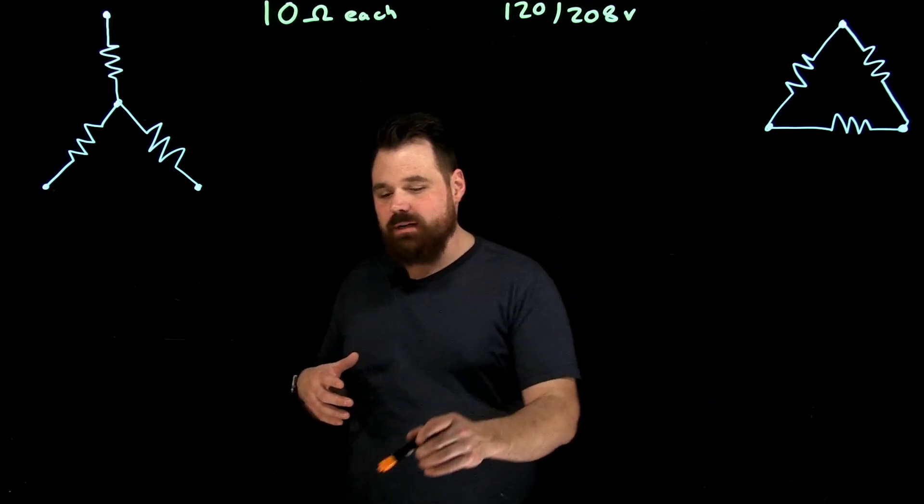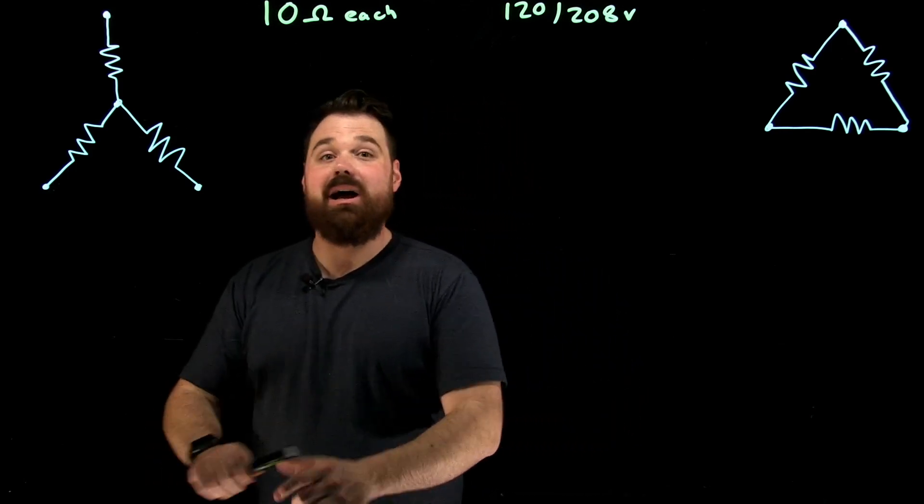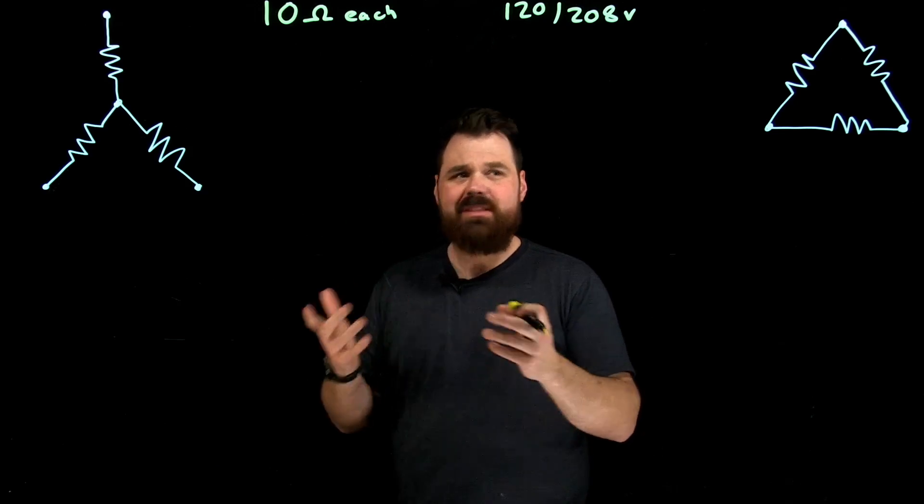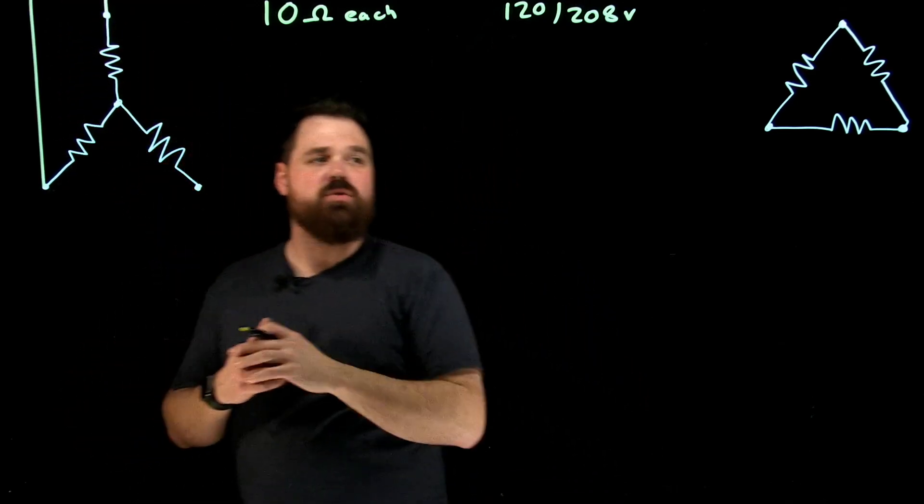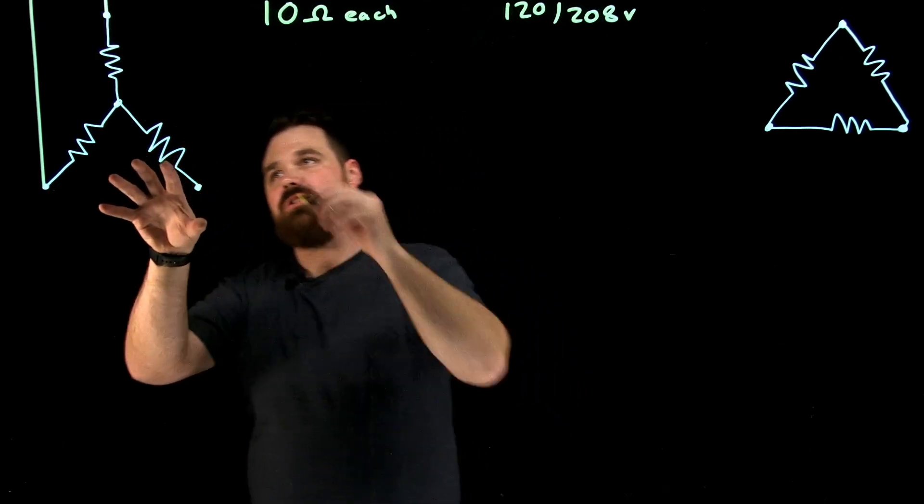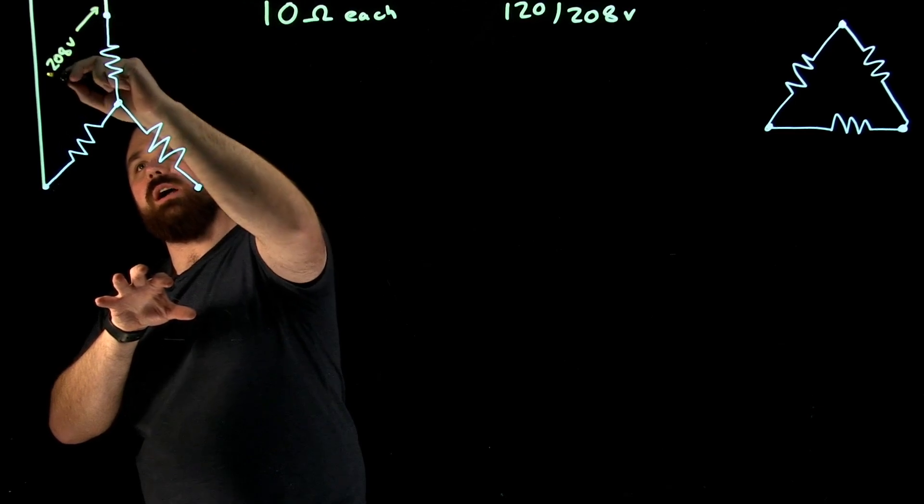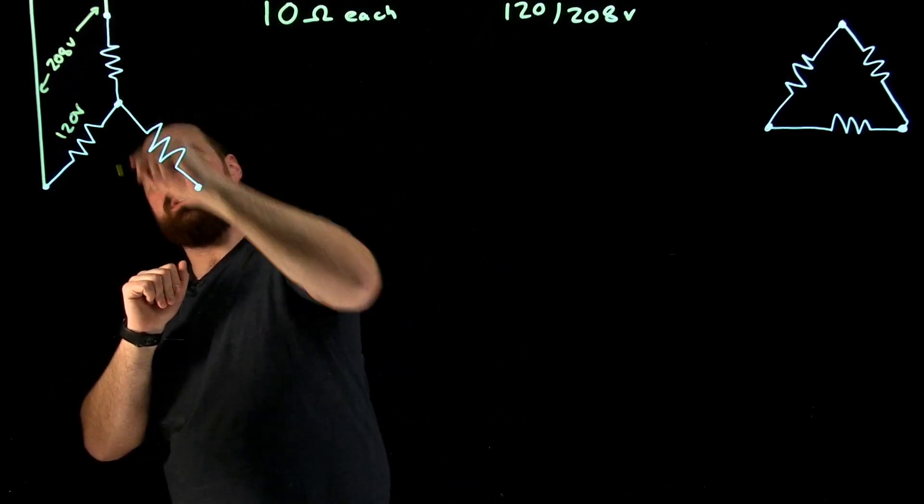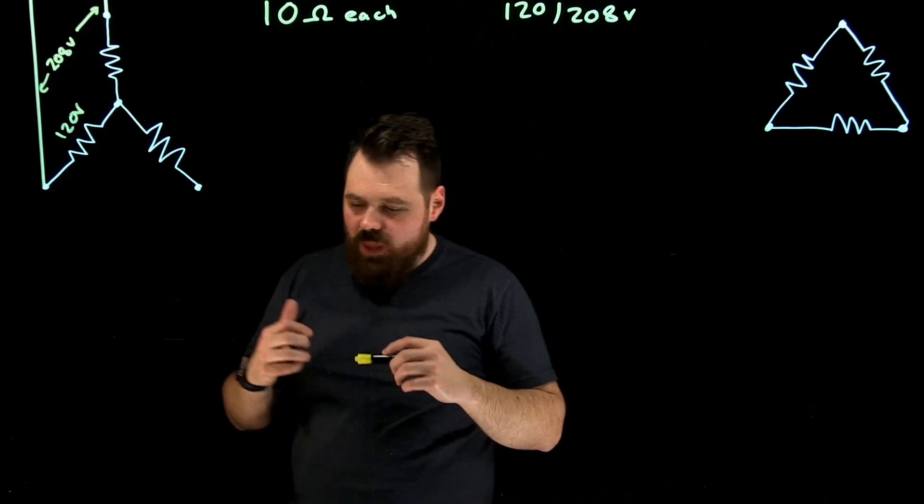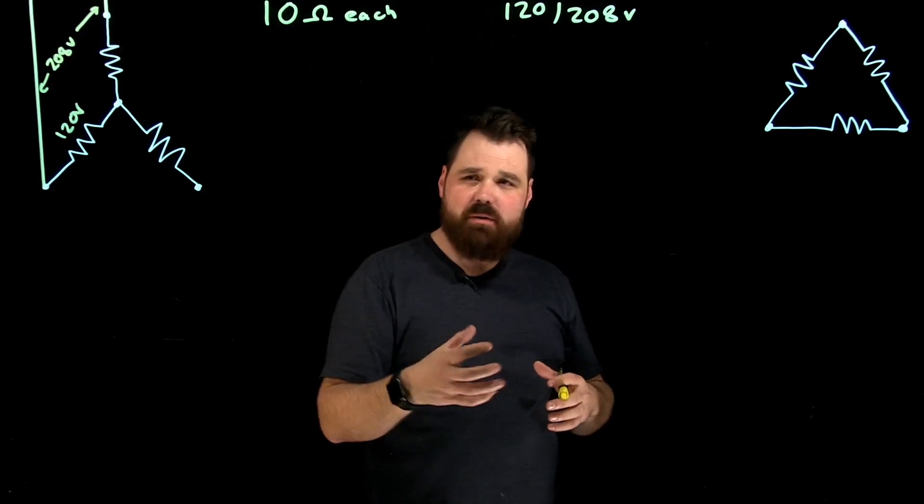So let's start by talking about the Y-connected. So in that Y-connected, I would of course have all these conductors going up to my source. Now in this connection, I would have 208 volts line to line, and I would have 120 volts here on the phase. Now when we're doing calculations and we're talking about current and we're talking about power, we can calculate right inside that phase.